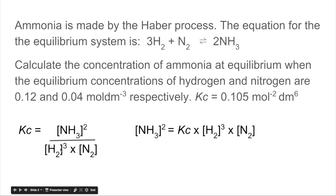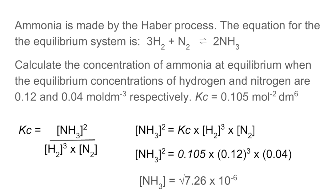So the hydrogen concentration cubed goes up to the top there and multiplies, as does the nitrogen concentration. So the NH3 concentration squared equals this, and then we need to square root that because this is the NH3 concentration squared, but we actually want the actual concentration of the ammonia.